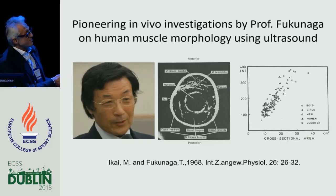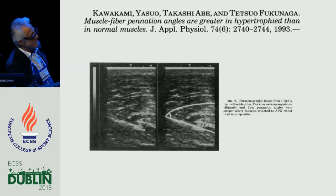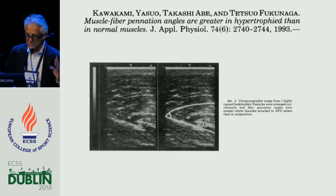Later on, he published hundreds of papers, and one of the seminal papers he produced together with Professor Kawakami was concerning the pennation angle of bodybuilders. He found that as muscle hypertrophies, the fascicle pennation angle increases dramatically, because the length of the aponeurosis is fixed, and the only anatomical way we can pack more contractile tissue is by increasing pennation angle.